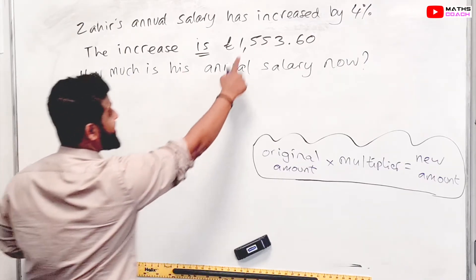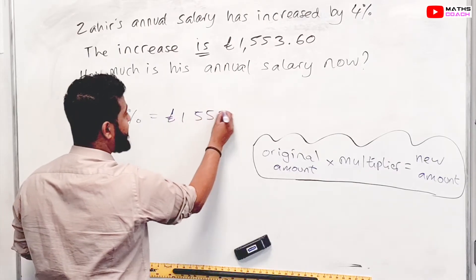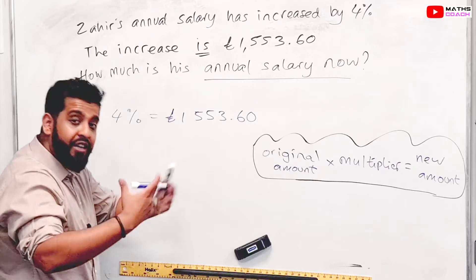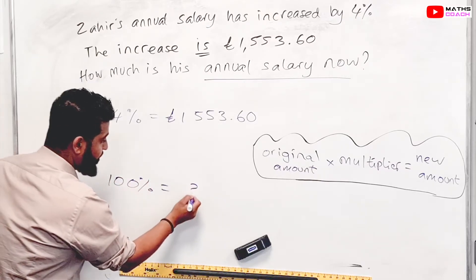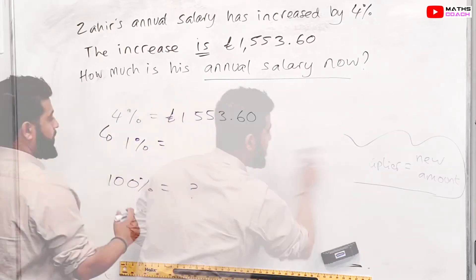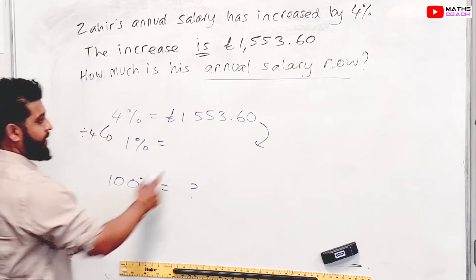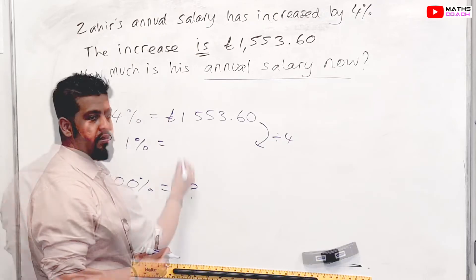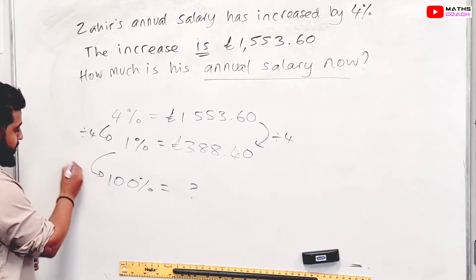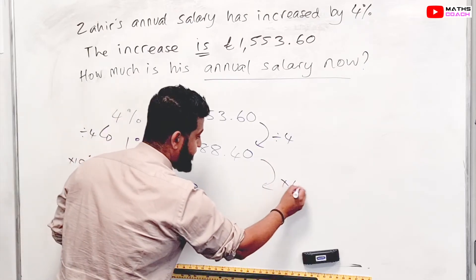Let's write it down. We're told that the increase is worth 4%, so: 4% equals £1,553.60. We want to know how much his annual salary is now, so we want the 100% value. To get there, we find 1% first. We divide by 4 to go from 4% down to 1%, so we divide £1,553.60 by 4, giving us £388.40. Then we multiply by 100 to get the 100% value.